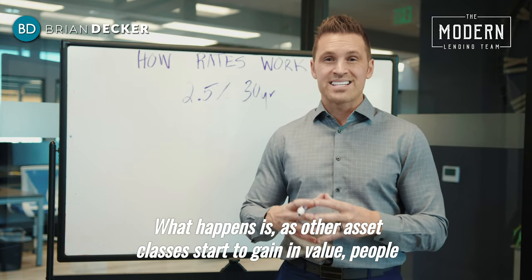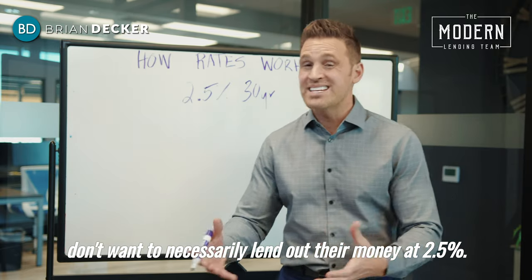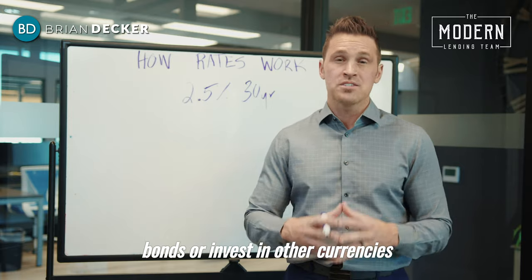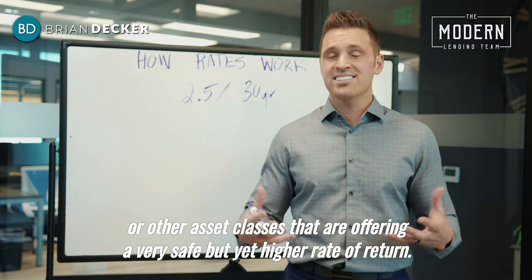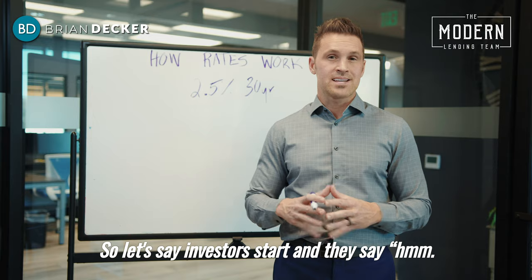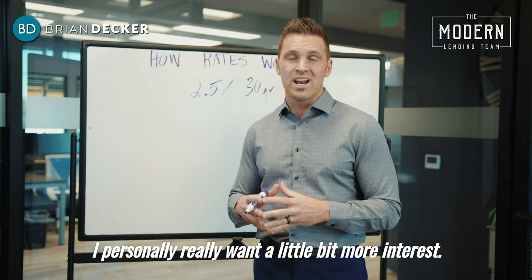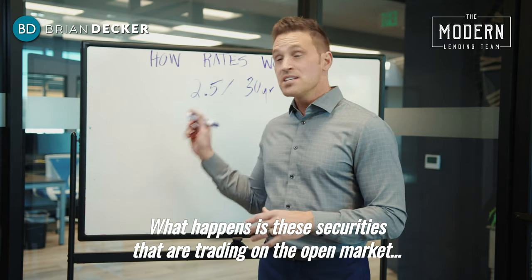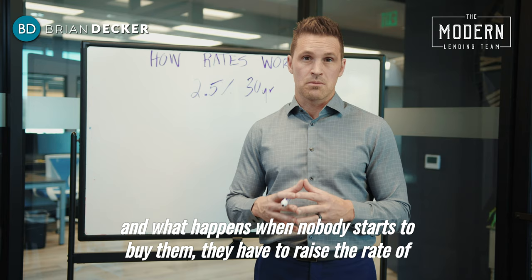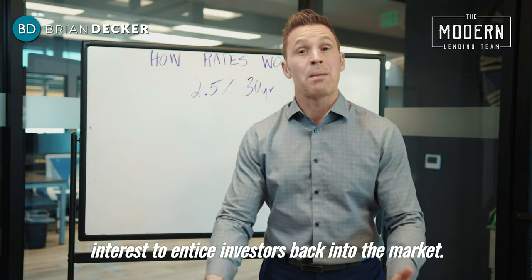What happens is, as other asset classes start to gain in value, people don't necessarily want to lend out their money at 2.5% when they can take that money and invest in corporate bonds, other currencies, or other asset classes offering a safe but higher rate of return. So investors start to say, 'I don't really want to be investing at 2.5%.' When nobody starts to buy those securities on the open market, they have to raise the rate of interest to entice investors back.